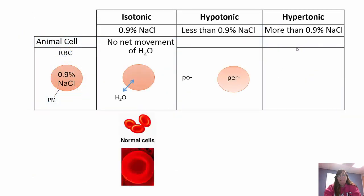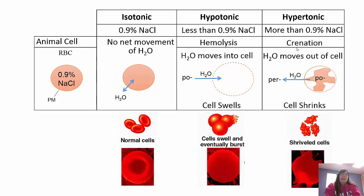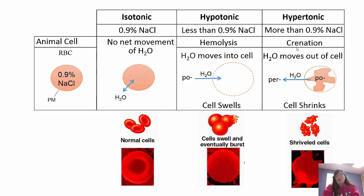There are differences between animal and plant cells. The isotonic solution for animal cells is 0.9% NaCl - if you go to the hospital for an IV, they give you around 0.9% NaCl; there's no movement of water and everybody's happy. If in an environment less than 0.9% NaCl, water moves into the cell, the cell swells and eventually bursts - this is called hemolysis (lysis means break, hemo means blood). In hypertonic environments with more than 0.9% NaCl, water moves out of the cell, the cell shrinks - in red blood cells this is called crenation. You need to know this terminology.